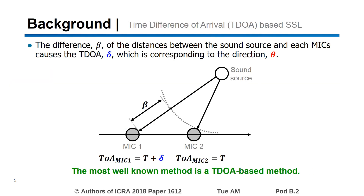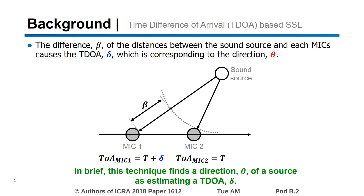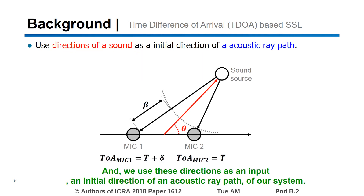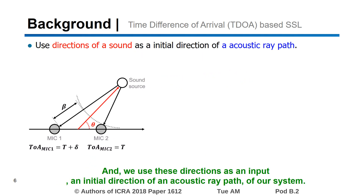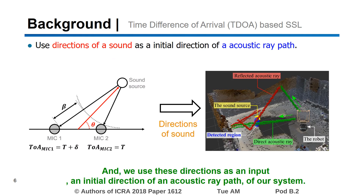The most well-known method is a TDOA-based method. In brief, this technique finds a direction theta of a source by estimating a TDOA delta. We use these directions as an input for the initial direction of an acoustic wave path of our system.